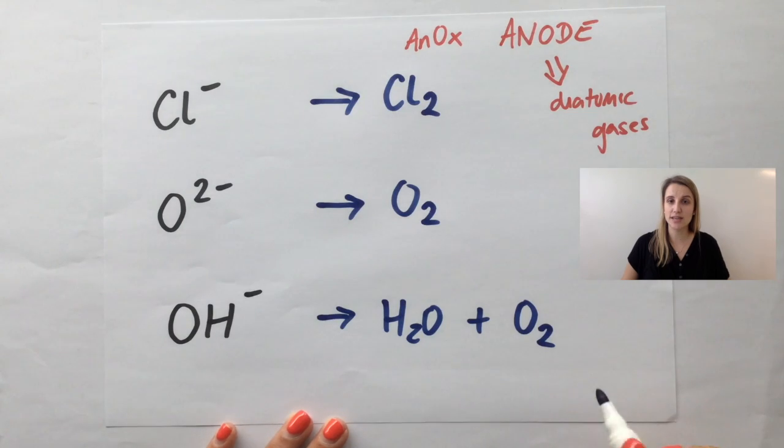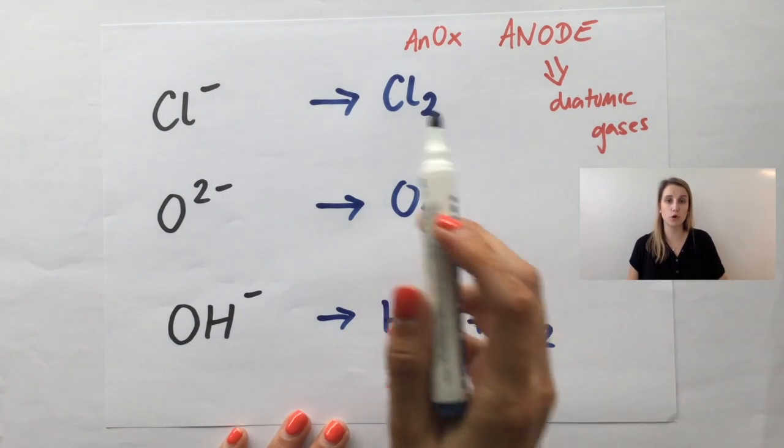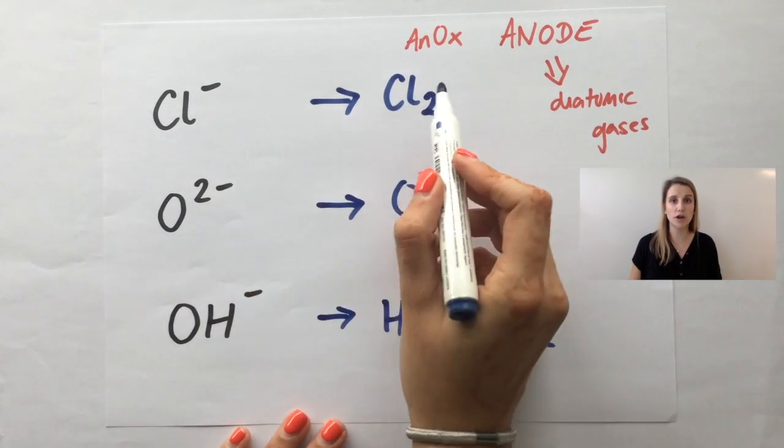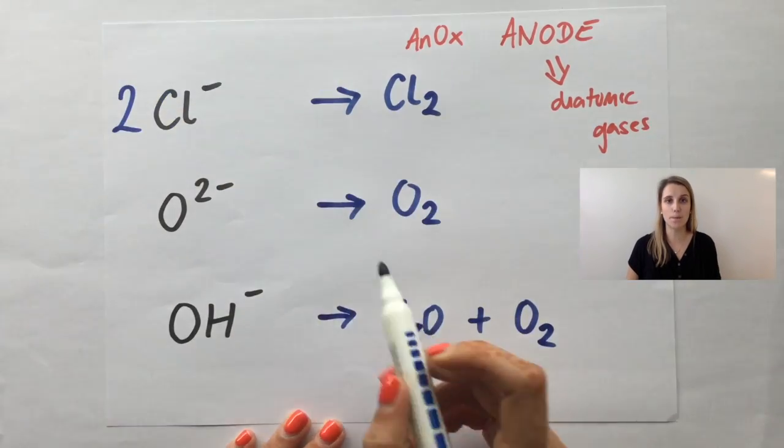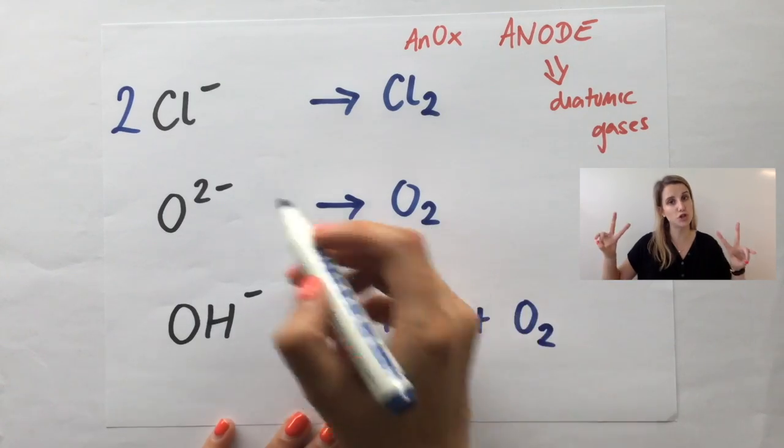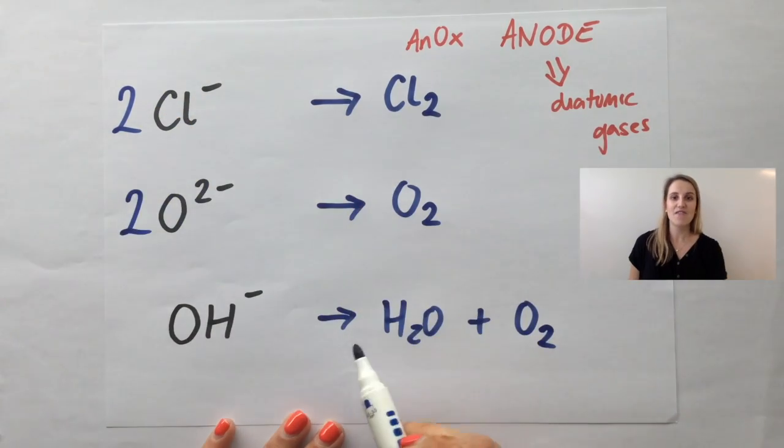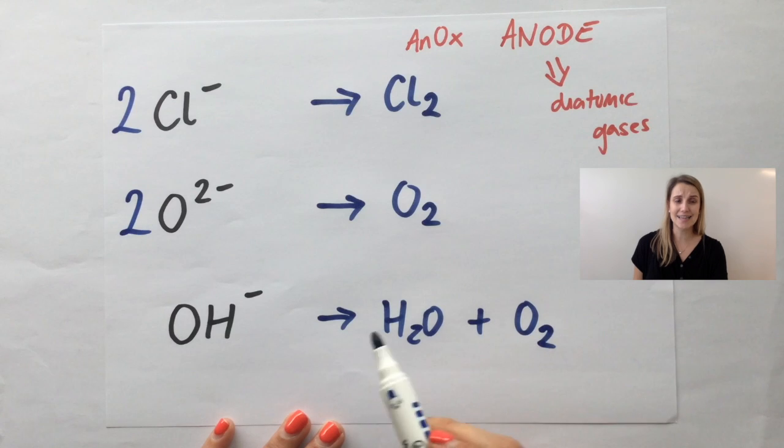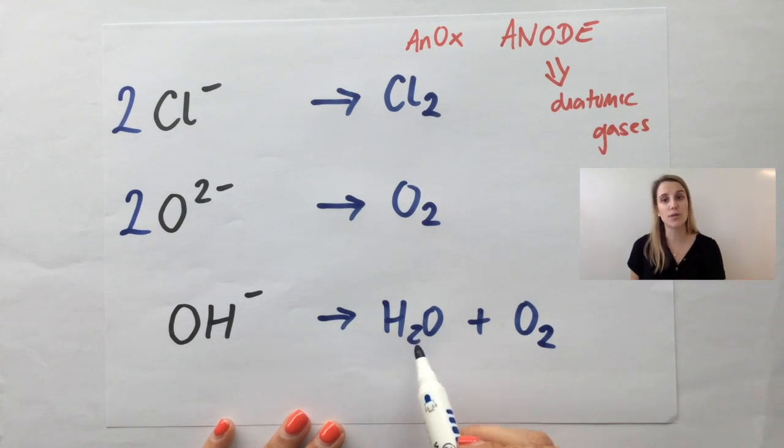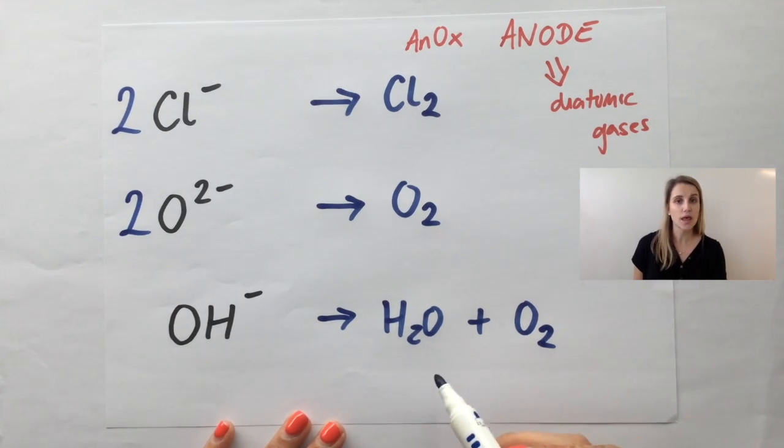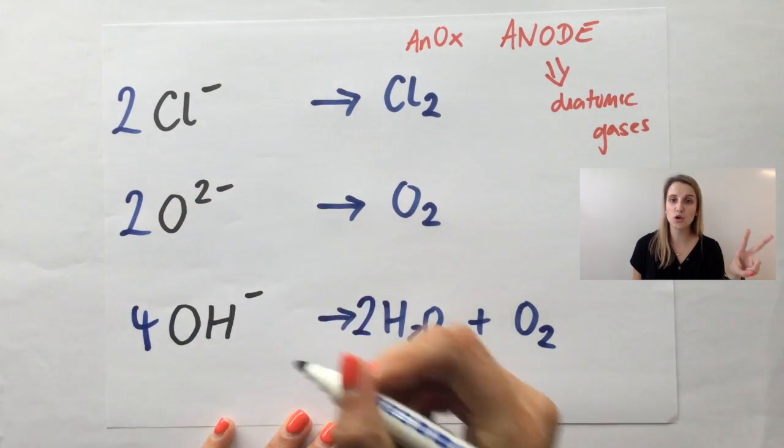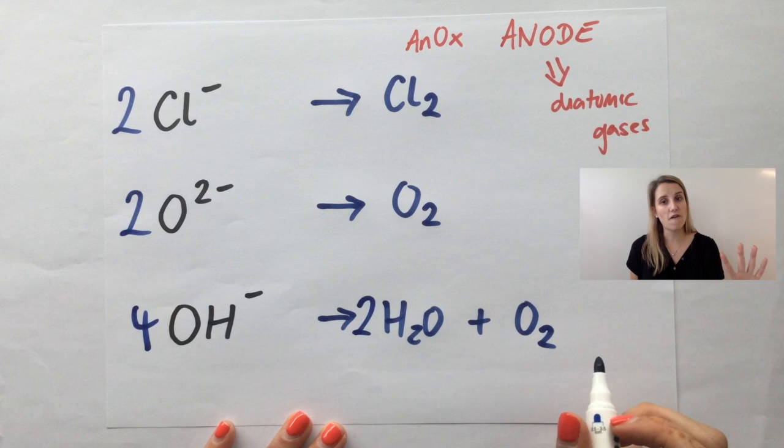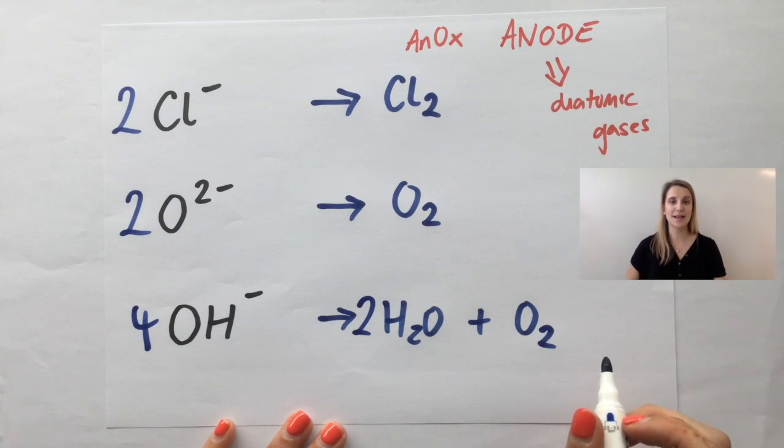Let's balance out the atoms like we would do normally. So the first one, there's one chlorine on the left and two on the right, so I need to balance that out by adding a big two in front of my chloride ions. So now I've got two on both sides. For the second one, it's exactly the same. There's one oxygen on the left but two on the right, so let's add the big two. And for the last one, it's a bit tricky to balance, but if you add two waters, then that means that you require four OH⁻s to balance it out.